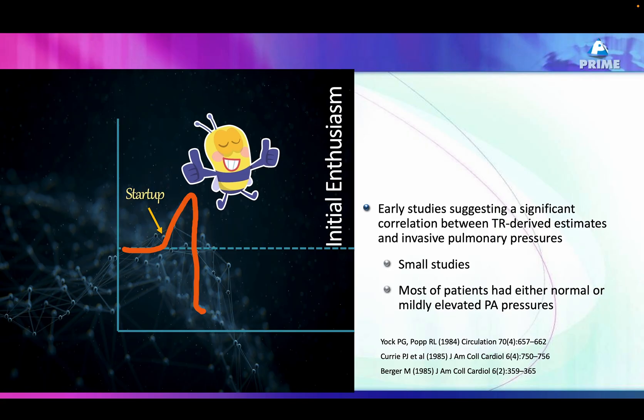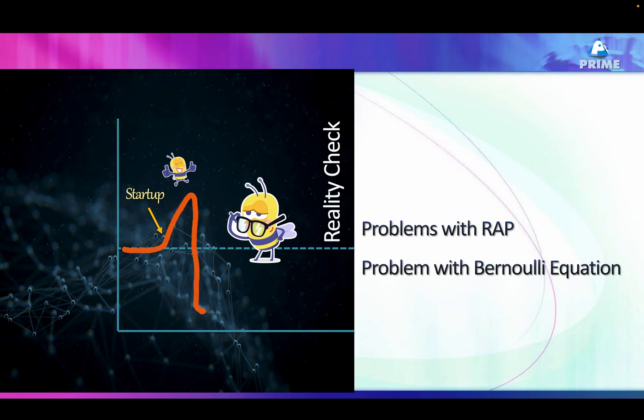That initial enthusiasm came from important studies which showed that PA pressure correlates wonderfully with the pressure calculated by this formula on echocardiogram. But the problem was those were very small studies, and moreover they included more than 80 percent of patients with normal pulmonary artery pressure — they did not have patients with high pulmonary artery pressure, where this equation actually does not hold true. We then started realizing there were issues with both RA pressure and pulmonary artery pressure calculation by TR.